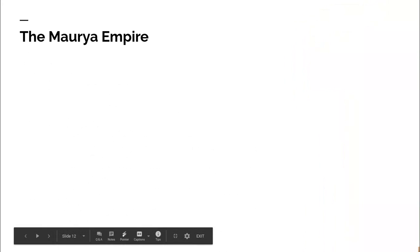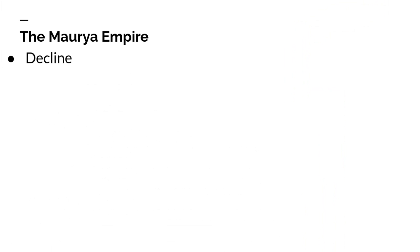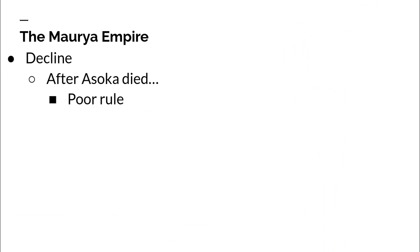The Maurya Empire, like all empires, eventually declined. After Ashoka's death there was poor leadership, poor decision-making, and invasions by other peoples. These kings made very bad decisions — they forced merchants to pay high taxes and took crops away from farmers and peasants. It got so bad that the last ruler of the Maurya Empire was killed by his own general.